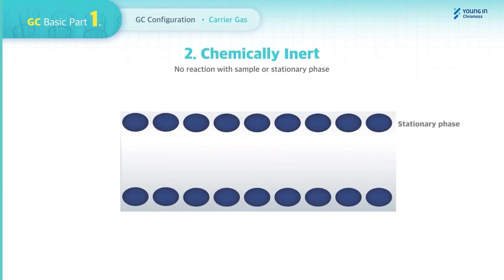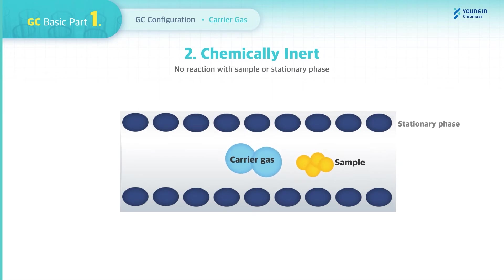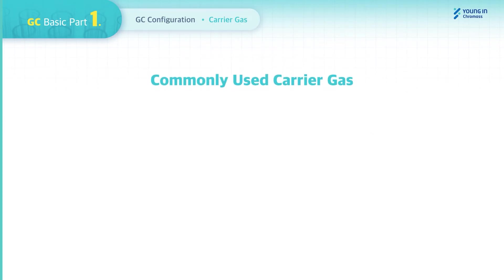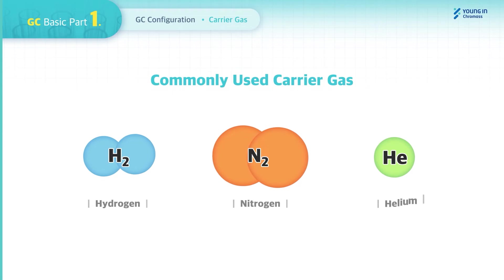Second, it should be chemically inert. Being chemically inert means there are no chemical reactions between Carrier Gas and either samples or the stationary phase in the column. The three major gases commonly used as Carrier Gas are Hydrogen, Nitrogen, and Helium — they all meet the requirements of being pure and chemically inert.